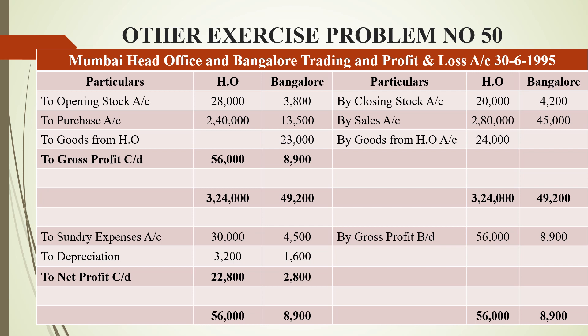Now we prepare the profit and loss account. Gross profit of 56,000 and 8,900 is brought down. Indirect expenses — sundry expenses — are 30,000 for head office and 4,500 rupees for branch. Depreciation on fixed assets at 10%: 32,000 gives 3,200 and 16,000 gives 1,600. The balancing figure gives net profit of 22,800 for head office and 2,800 for Bangalore branch. Grand total on both sides: 56,000 and 8,900.